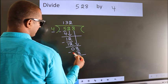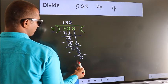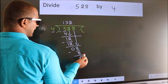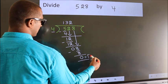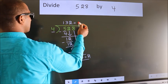Now we subtract. We get 0. No more numbers to bring down. So we stop here. This is our remainder. This is our quotient.